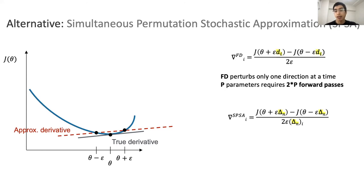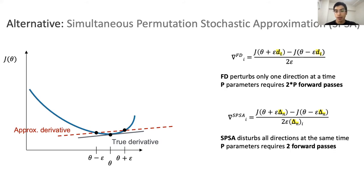As you can see, the main differences are between the d vector and the delta vector. In the case of finite differences, the d vector is the unit vector for each parameter, whereas in the SPSA case, delta is a random perturbation vector. This random perturbation vector is sampled from a symmetric Bernoulli distribution. SPSA perturbs all directions at the same time. And as well, in each iteration, the total number of function evaluations is two.